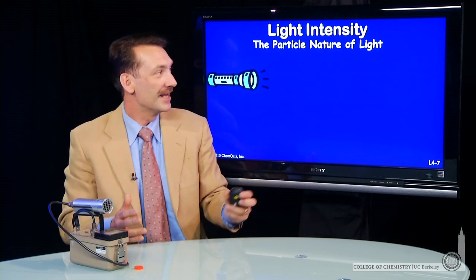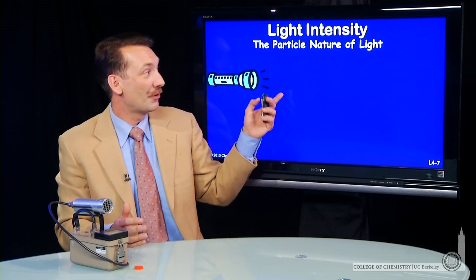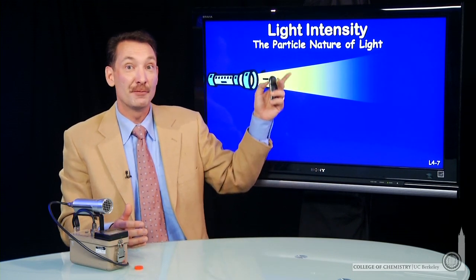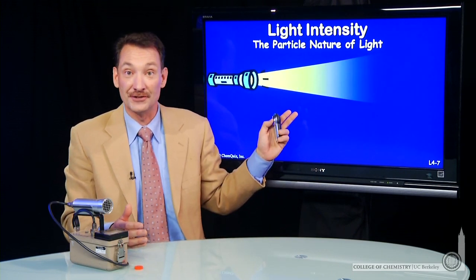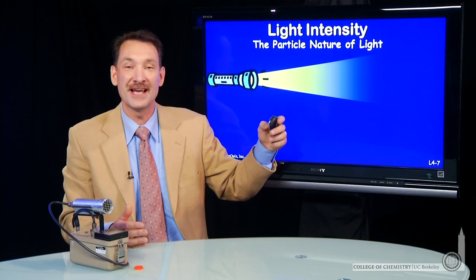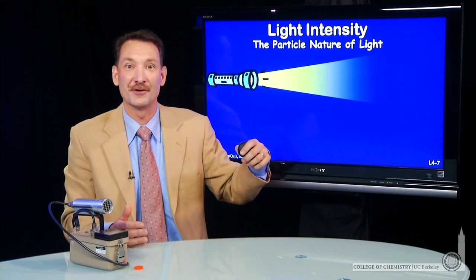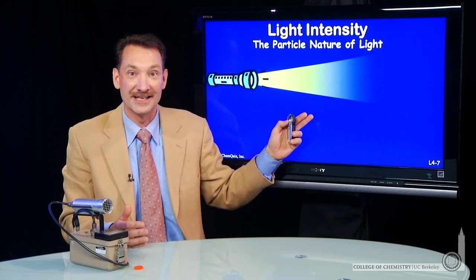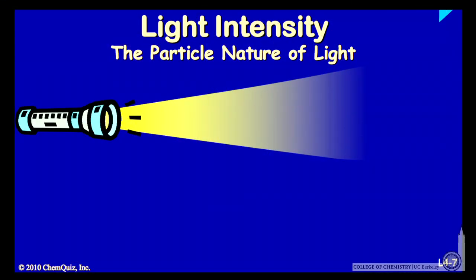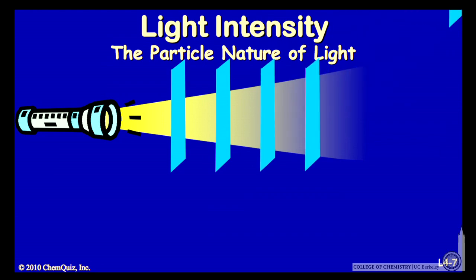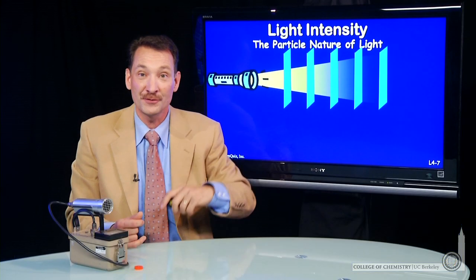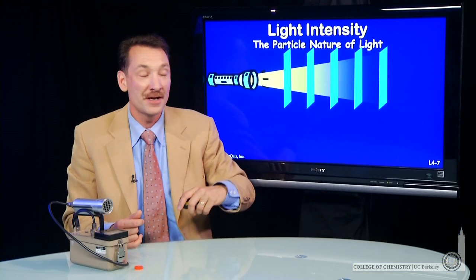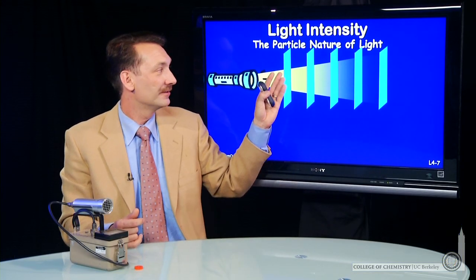Can we do that with light intensity? Can we take a bright light and bring in filters that reduce the intensity by a factor of 2, cut the light intensity in half again, and again, and again? Well, of course, we can do the experiment. What happens?